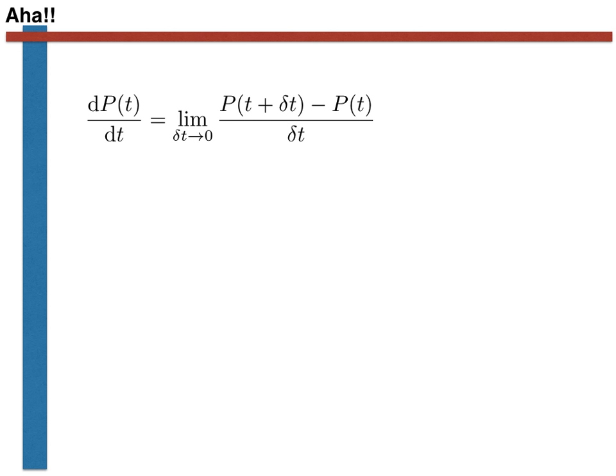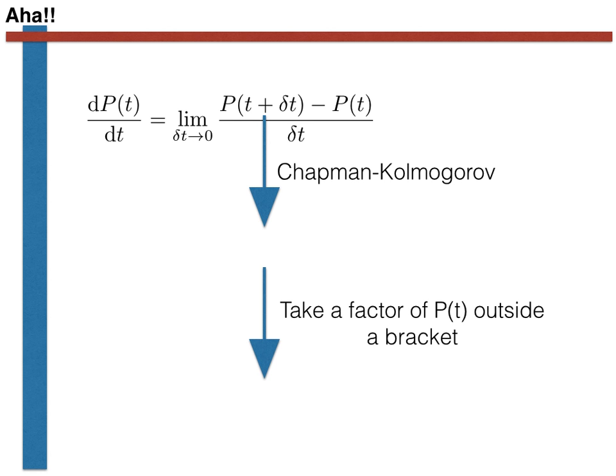This result is useful in the context of solving the limit on the right-hand side of our putative differential equation as it allows us to rewrite the factor of P of T plus delta T as P of T multiplied by P of delta T as shown here.